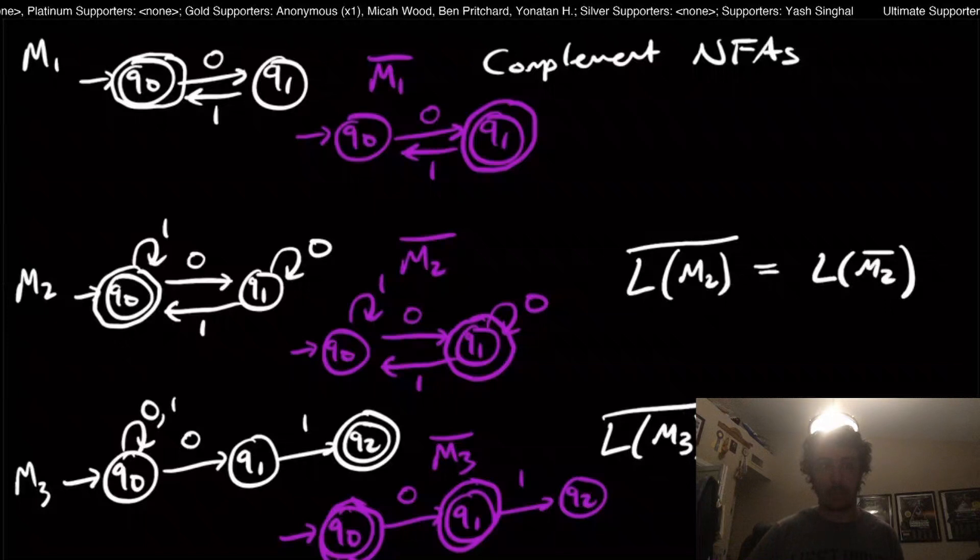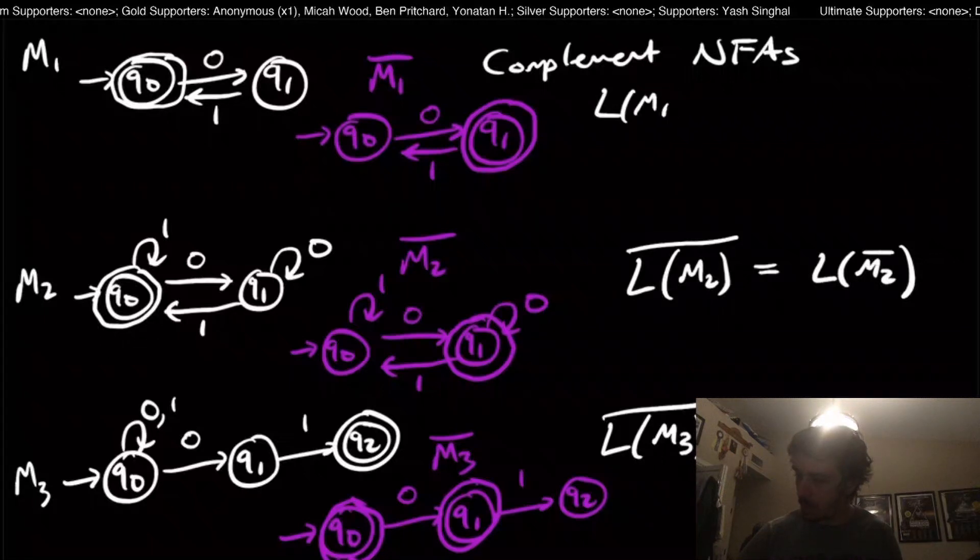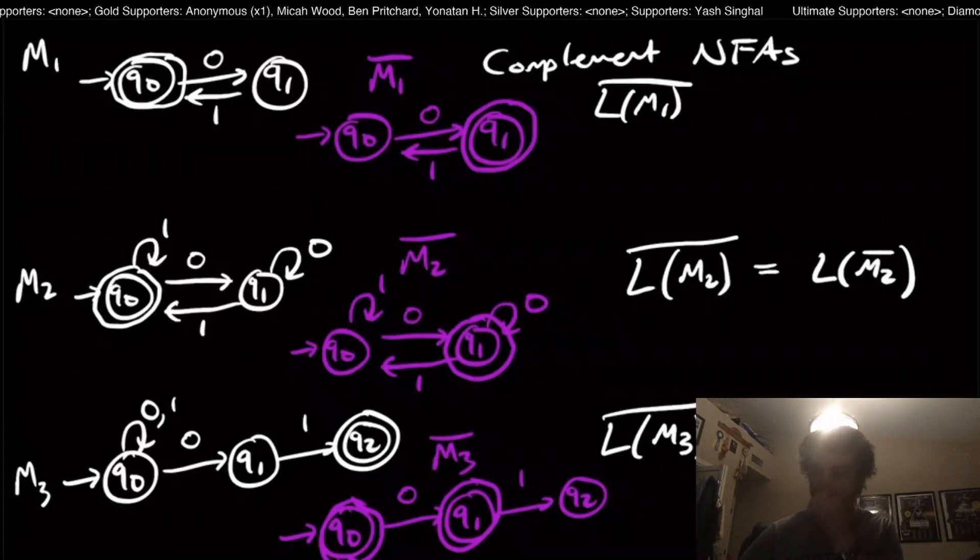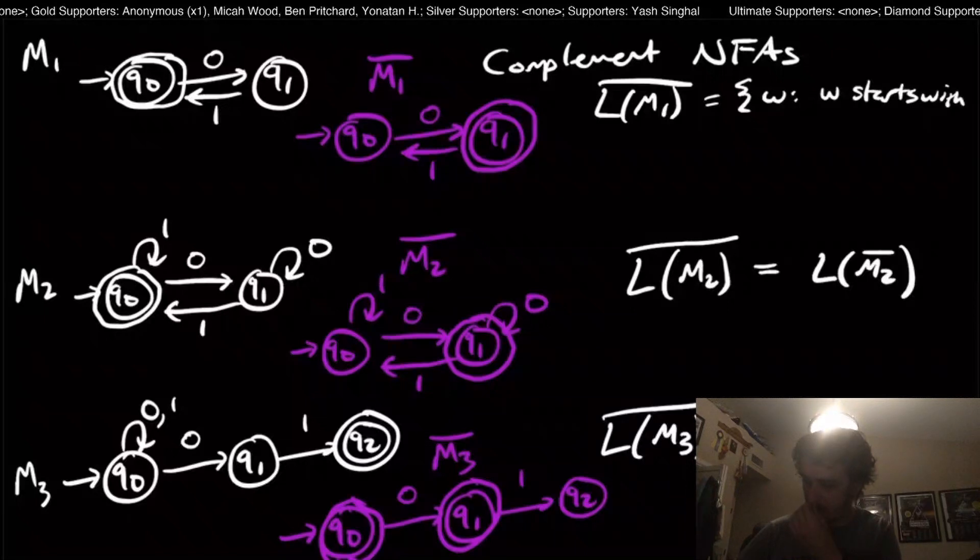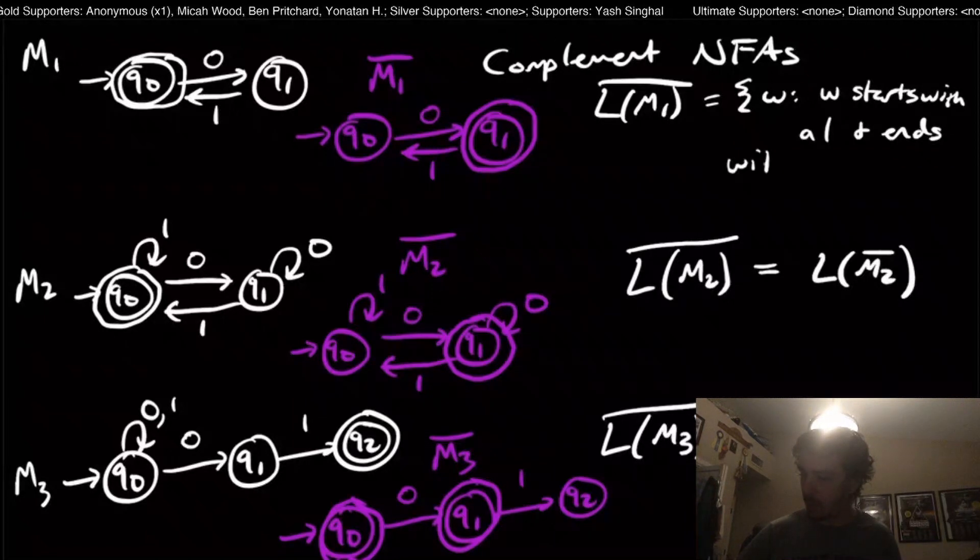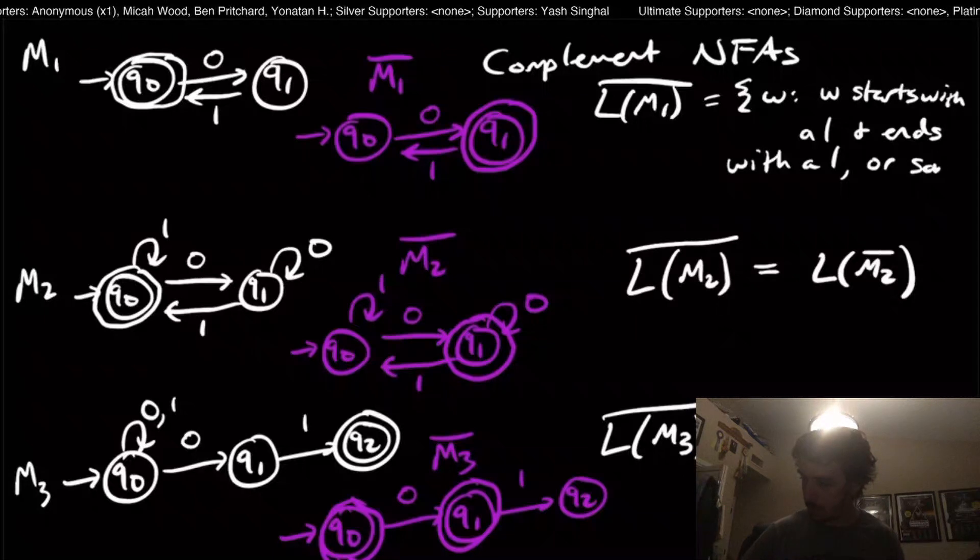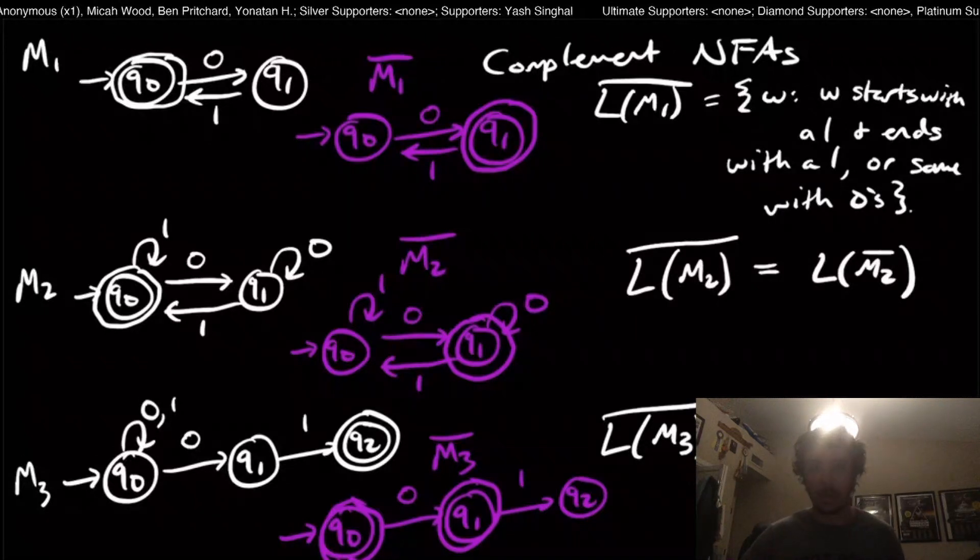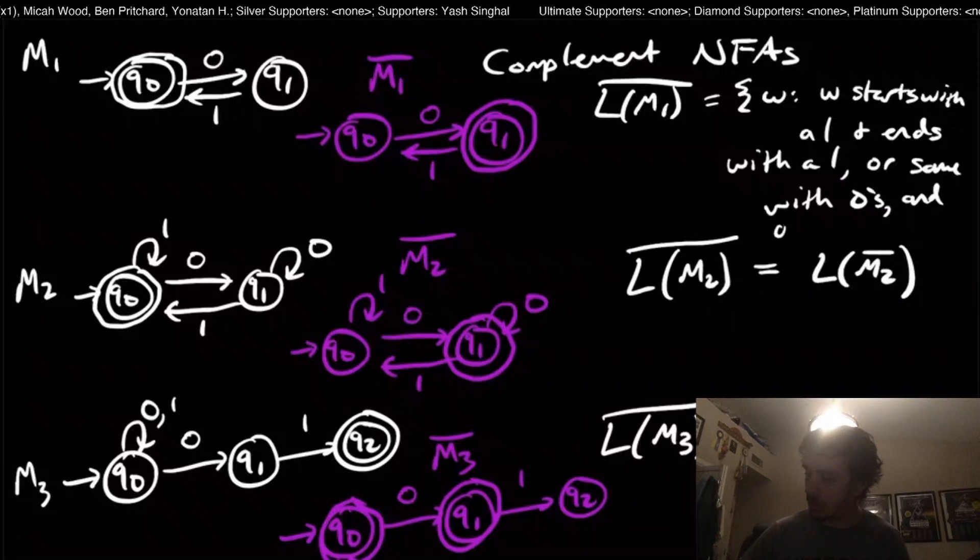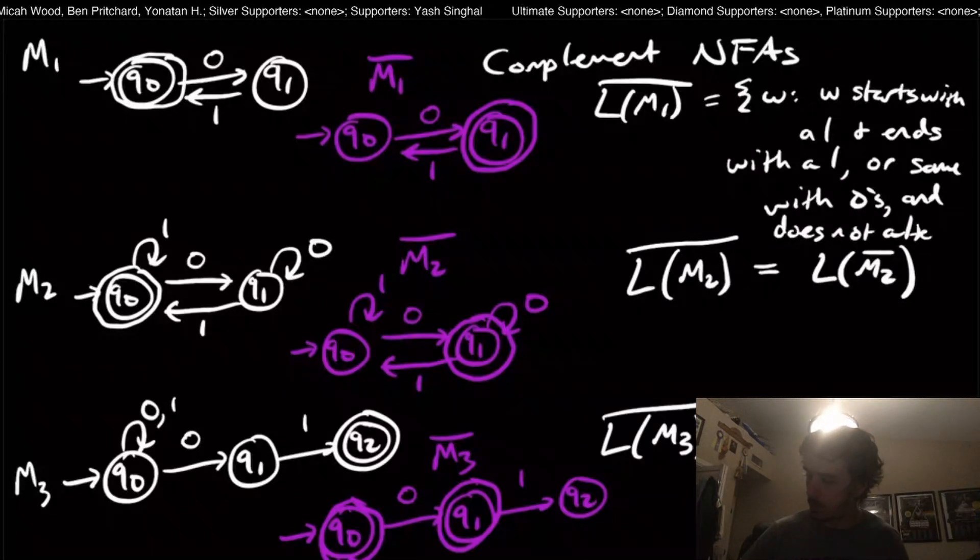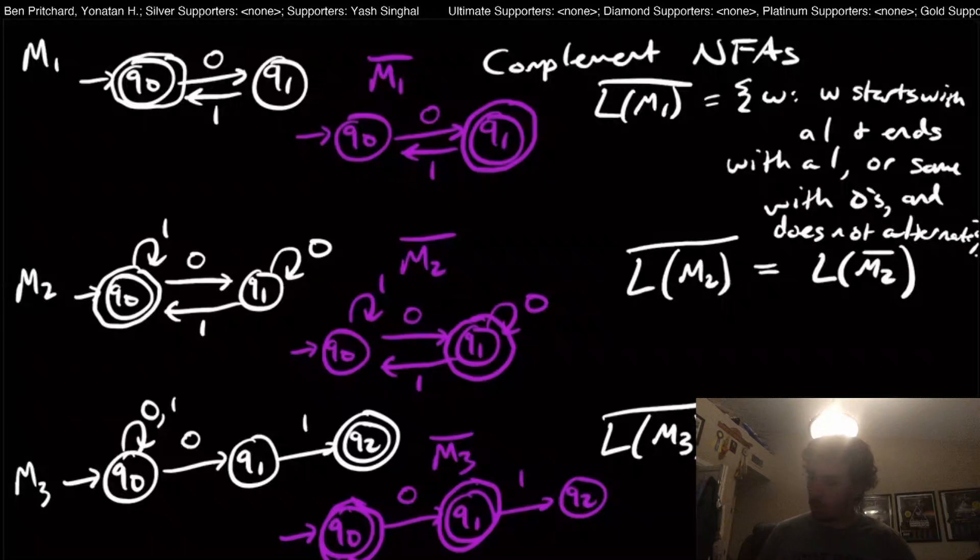Let's look at the complement of this thing. The complement of M1—the real complement that we should really accept—is the set of all strings such that w starts with a one and ends with a one, or similarly with zeros, and also doesn't alternate. It's a rather long description, but bear with me here.